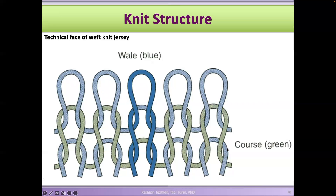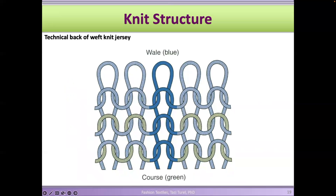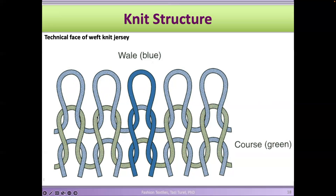This is a jersey fabric — the technical face of a weft knit jersey pattern. Jersey is probably one of the most common patterns and is used on t-shirts and sweatshirts. On the face of a jersey, you see V shapes going down through the grain line — the crowns of the loops are in the back. The wales run in the direction of the grain. When you look at a knit fabric, you see those V's going in each column.